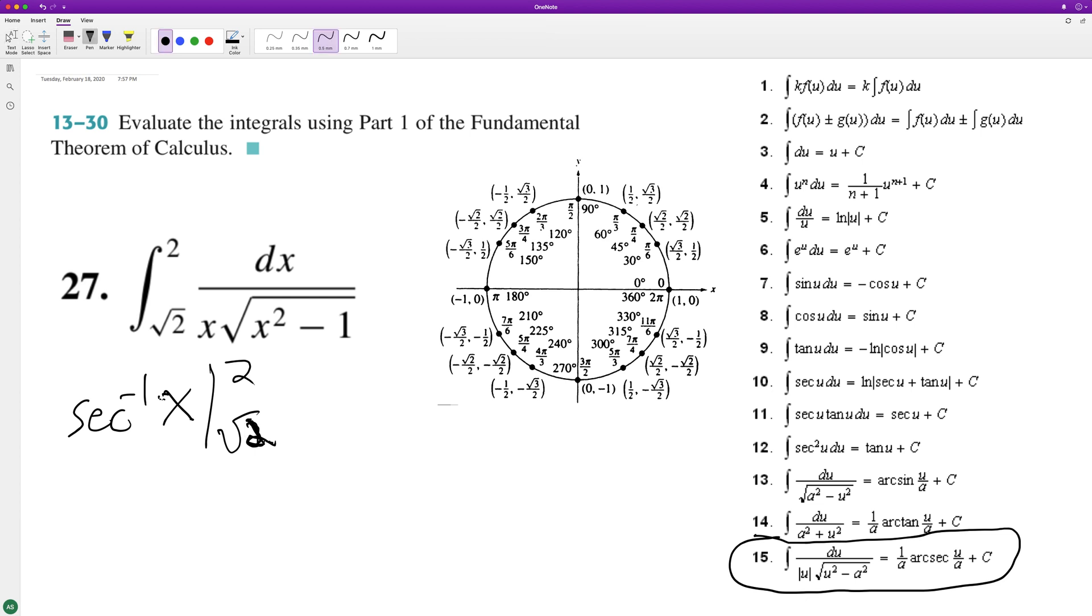All right, so inverse secant of 2 minus inverse secant of root 2. And it helps to think of secant as 1 over cosine, which is the same thing as 1 over, or r over x in a way.